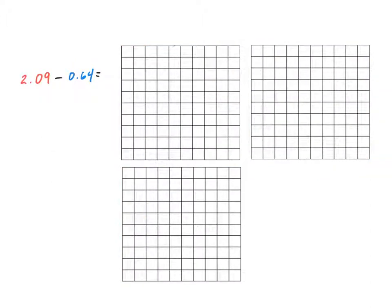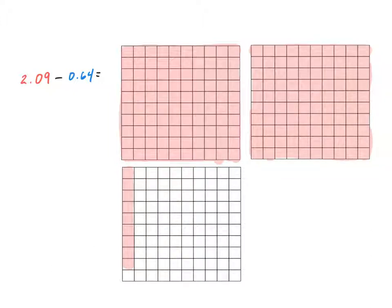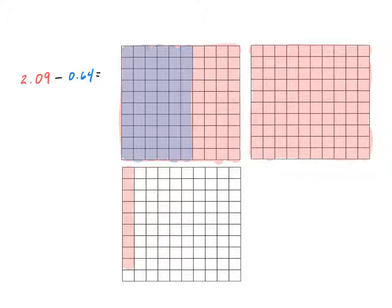In this next example I have two and nine hundredths minus sixty-four hundredths. The first thing I'm going to do is model the number I have, which is two and nine hundredths. I've quickly modeled two holes, and I need nine hundredths more — nine more squares. There's the nine hundredths. Now I'm ready to model the number I'm going to take away — sixty-four hundredths. I'll start at the top and take away six tenths first: one tenth, two, three, four, five, and six tenths taken away.